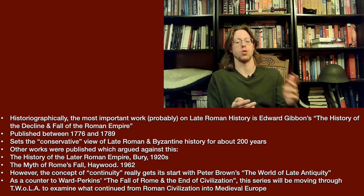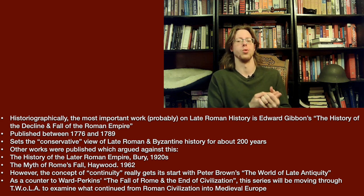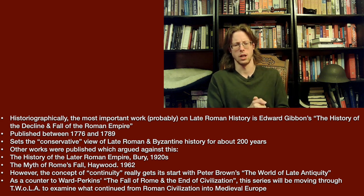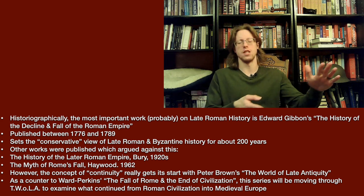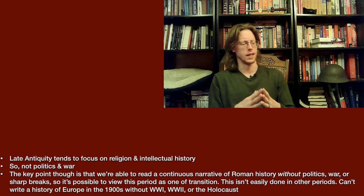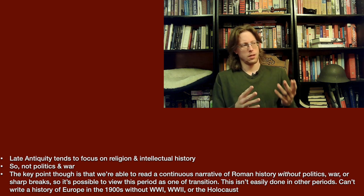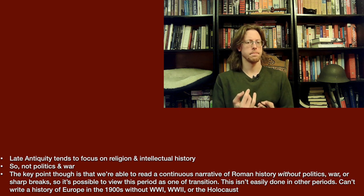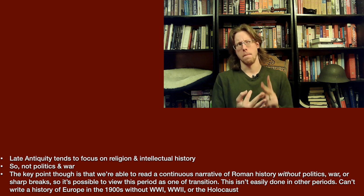However, this whole idea of transition and continuity, not decline and fall, really gets its start with the publication of Peter Brown's The World of Late Antiquity in 1971. As a counter to Ward Perkins' The Fall of Rome and the End of Civilization, what this series is going to be doing is largely moving through The World of Late Antiquity, in addition to some other books, to examine what continued from the Roman period into early and high medieval Europe. The key point with late antiquity is that it tends to focus on religion — Christianity, Judaism, and Islam — and on intellectual history and philosophy, not really politics and war.